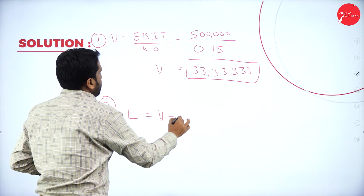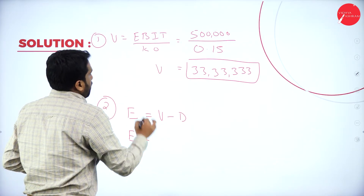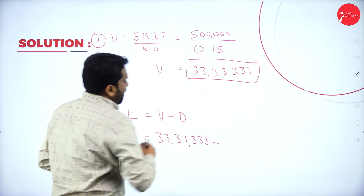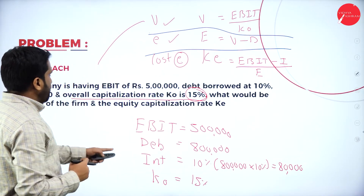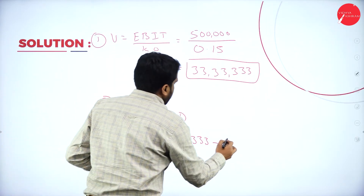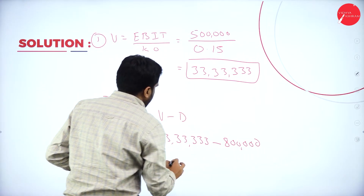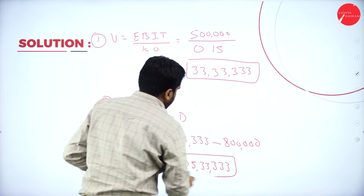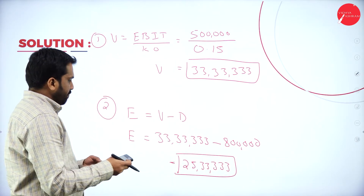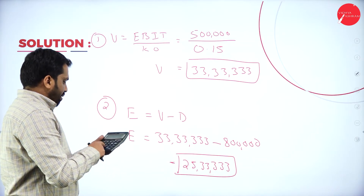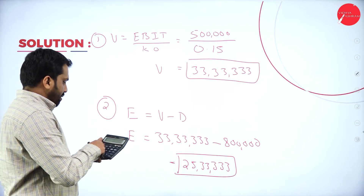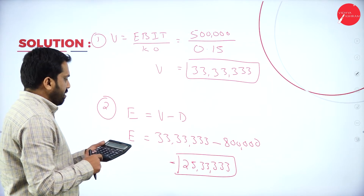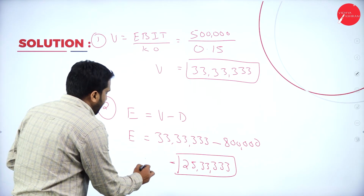Equity equals value minus debenture. Value is 33,33,333 minus debenture of 8 lakh. So I got 25,33,333. This is the value of equity.